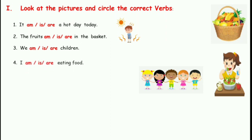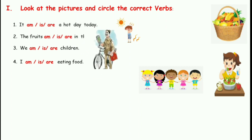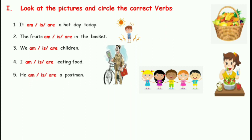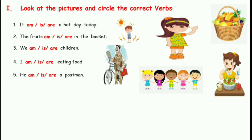Here you can see a child eating food. The options are am, is and are. I is singular, so the verb that follows I is am. The sentence reads: I am eating food — you will circle am. Here we have a postman. The sentence is: He blank a postman. He means singular, so he is a postman — you will circle is. Here we have a girl. The sentence is: I blank a girl. The verb that follows I is am, so: I am a girl — you circle am.